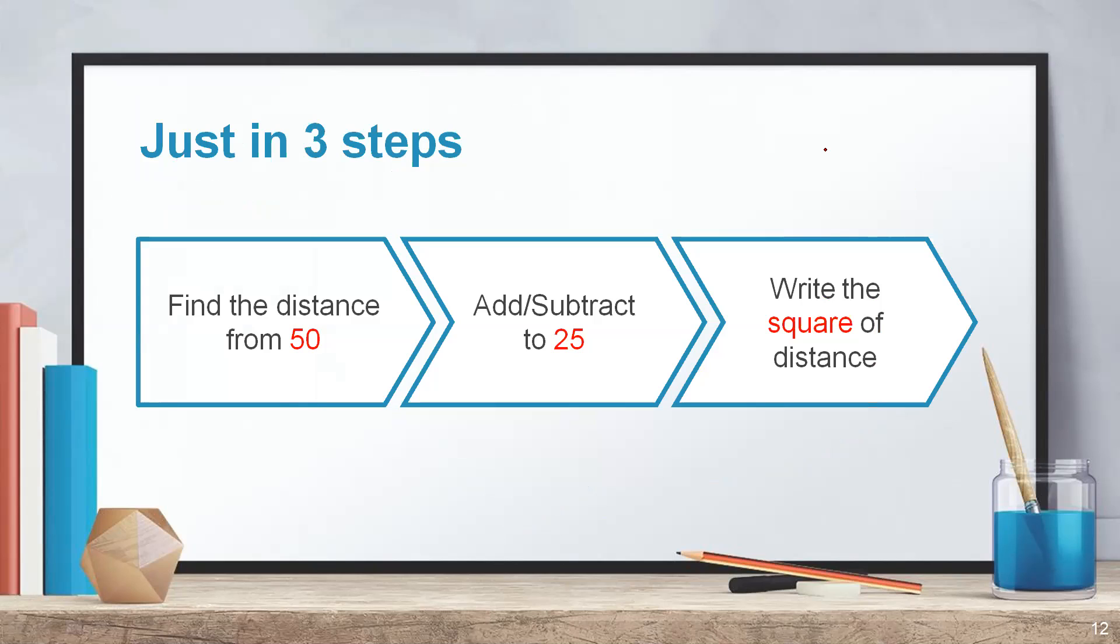First is find the distance from 50. I hope with an example it becomes more clear. I'll take the example as 52. If you want to find out square of 52, first step is find the distance from 50. 52 is plus 2 from 50. Add or subtract to 25. Here, since it is a plus number, you have to add 25 plus 2 is 27. Write square of the distance. Distance is 2. Square of 2 is 4. But make sure that you write the square as a 2 digit number, which means you have to write it as 04. So square of 52 is going to be 2,704.